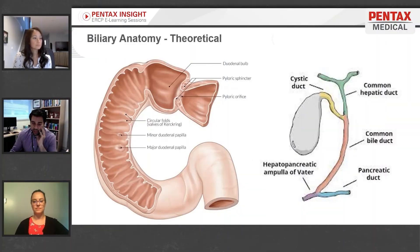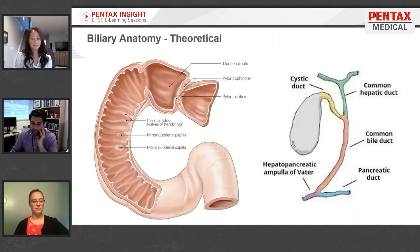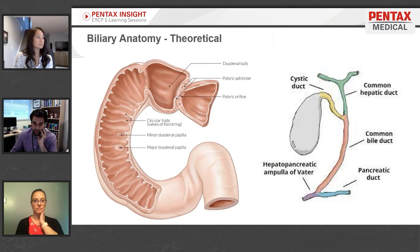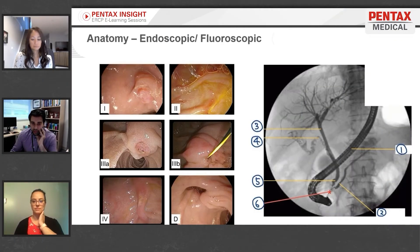The part where the common bile duct comes out is called the major papilla. The pancreatic duct is in very close spatial proximity to the common bile duct — those two actually share a common channel called the ampulla of Vater. There's a major duodenal papilla where everything drains out, connected at the ampulla of Vater.